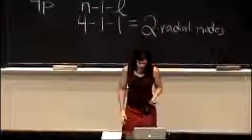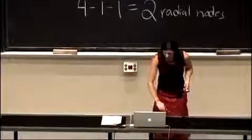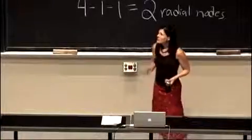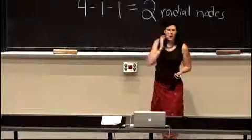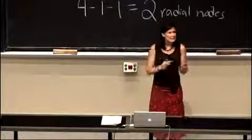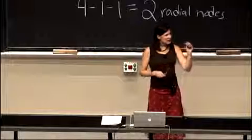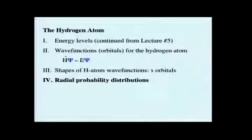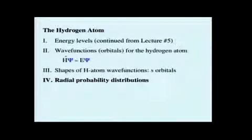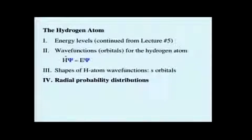So we can switch back to our notes here. Doing those probability density dot graphs, we can get an idea of the shape of those s orbitals. We know that they're spherically symmetrical.